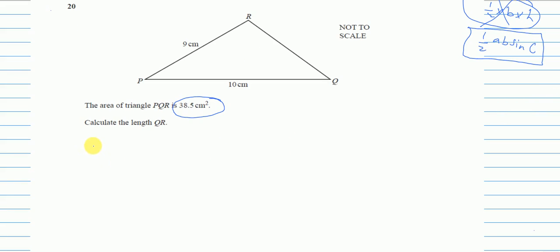So the area equals half ab sin C. My area is equals to 38.5 equals half, a is 10, b is 9, times sin C.